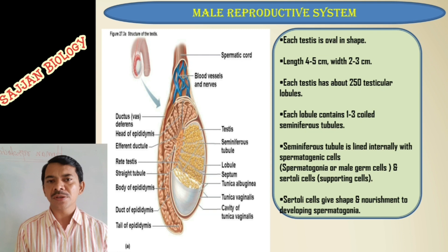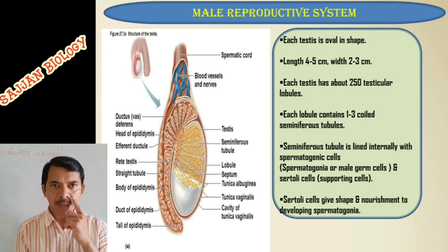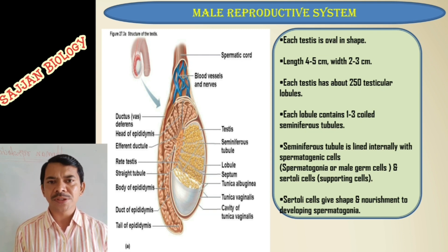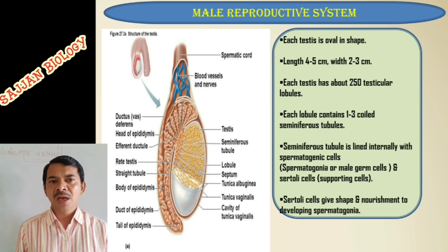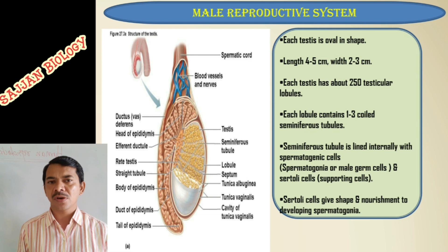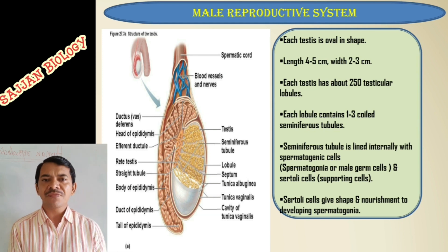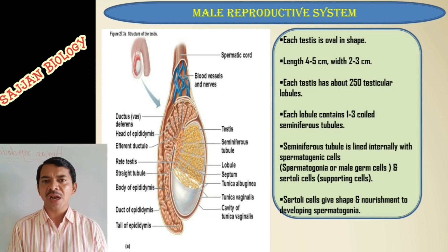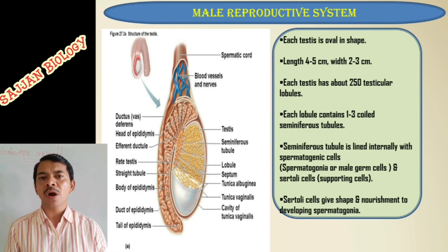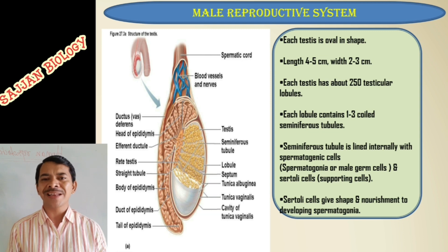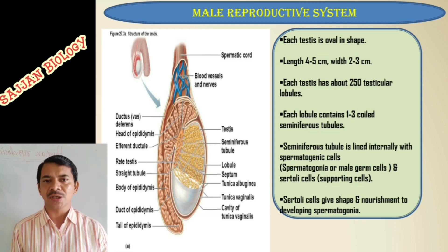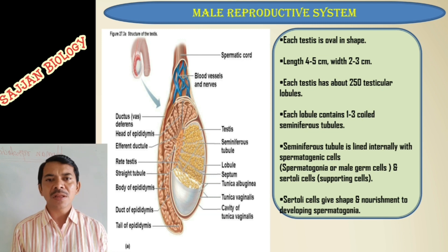Seminiferous tubules are lined internally with spermatogenic cells. These spermatogenic cells are the spermatogonia, or male germ cells. Sertoli cells are called supporting cells. The seminiferous tubules are associated with spermatogonia or germ cells, and these germ cells are produced by mitotic division and are in a diploid condition.